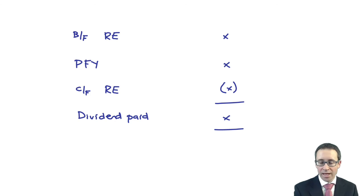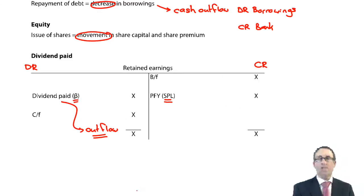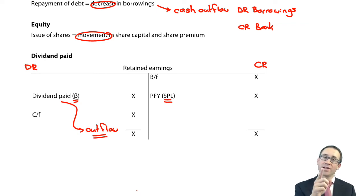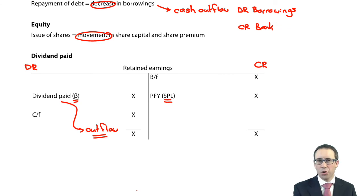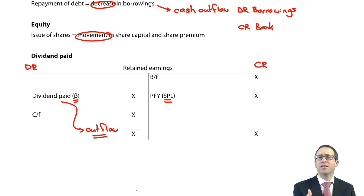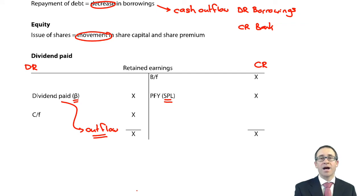I have no objection if that is the way that you work out the dividend paid within the exam. Whether you use T accounts or not — I just want to make sure that you get the right answer; that's all that matters. I haven't put any numerical examples in there because I think it's pretty straightforward. You will see those areas examined individually within the objective tests in the exam. You'll see bits of it in the next video as we go through a full blown statement of cash flow example. See you in a minute.